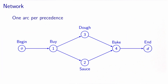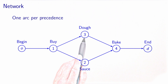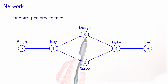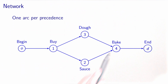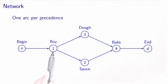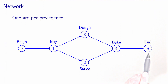We include an arc each time there is a precedence condition. To start making the sauce, buying the ingredients must be completed, so we have a corresponding arc. The same applies for the dough. To start baking the pizza, both tasks 2 and 3 must be completed, represented by two arrows. The origin node O must be a predecessor of every task — here it is a predecessor of the buy task — and symmetrically, node D must be a successor of all tasks, in this case a successor of bake.